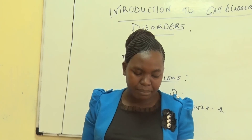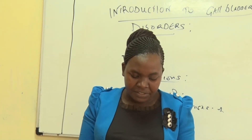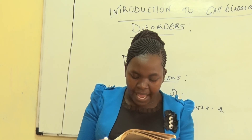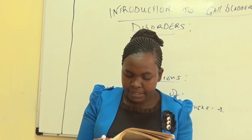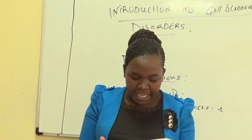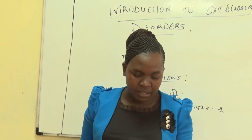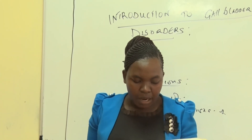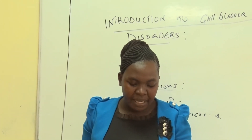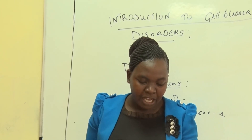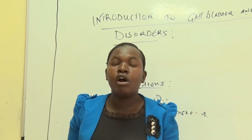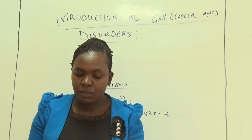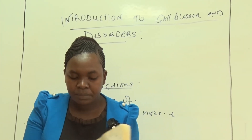Symptoms of gallbladder disease include: pain in the upper right portion of the abdomen, pain in the centre of the abdomen, pain in the right shoulder, and nausea or vomiting. That is the end of our today's lesson.